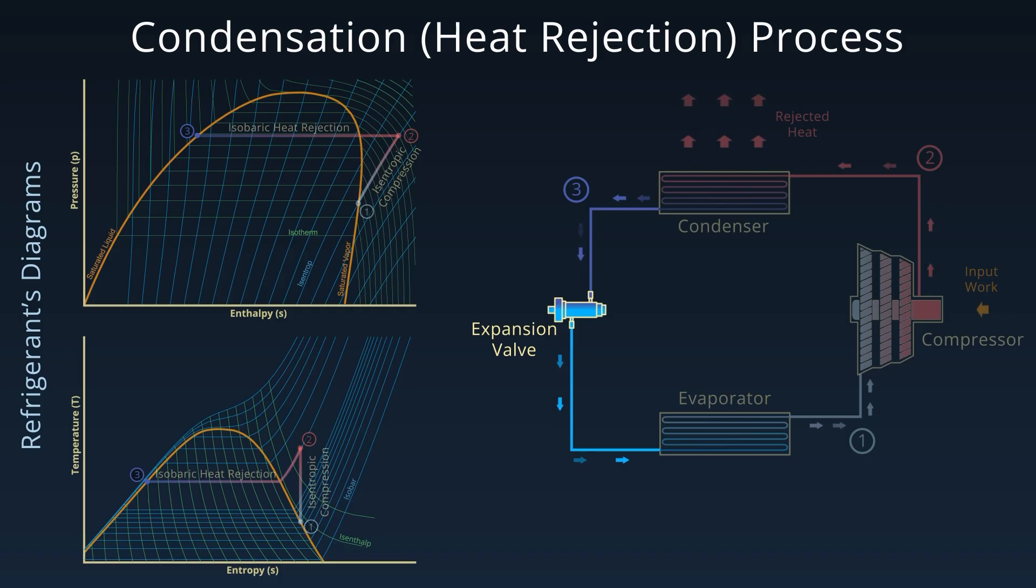Then comes the expansion process. From 3 to 4, the refrigerant passes through an expansion valve or throttle. This is an isenthalpic process. The enthalpy remains constant, but pressure drops sharply. As a result, part of the liquid flashes into vapor, cooling the mixture.